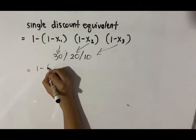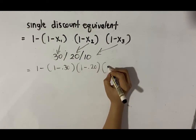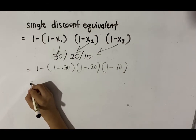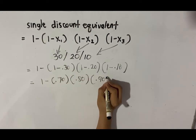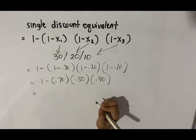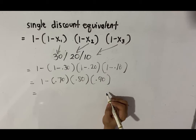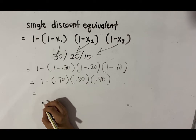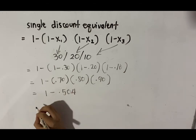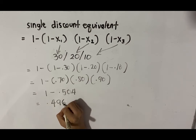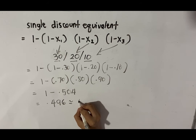Applying the formula: 1 minus [(1 minus 30%) × (1 minus 20%) × (1 minus 10%)], which gives us 1 minus [70% × 80% × 90%]. We compute the net decimal equivalent by multiplying 70%, 80%, and 90%. Then subtract from 1 to find the single discount equivalent: 1 minus 0.504 equals 0.496. Thus, the single discount equivalent for the trade discount series of 30, 20, 10 is 0.496, or 49.6%.